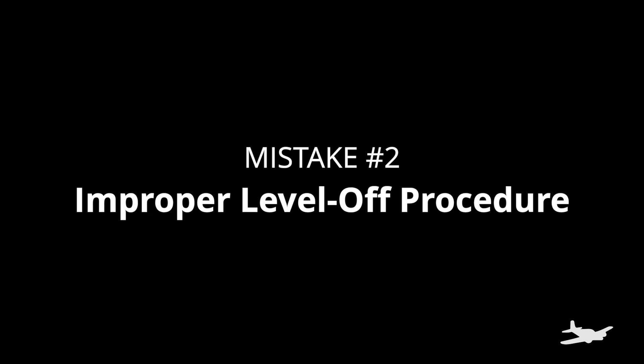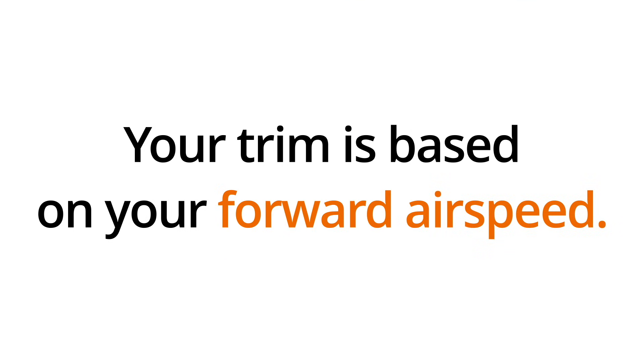The second thing I see all the time is an improper level-off procedure. If you find yourself 200 feet high — particularly as you're going into your instrument rating — you're probably leveling off with power. Remember, your trim is based on your forward airspeed. If you stop your climb with the nose still pointed up just by pulling the power back, you're at 80 or 85 knots. Over the next 10 minutes or so, the aircraft is going to have to figure out where level is, and as you do that, you are likely to return to a climb. You'll notice it eventually, say "oh shoot, I'm 200 high," pitch forward, trim that off, and eventually the aircraft will stabilize at its cruise speed.